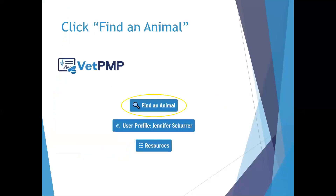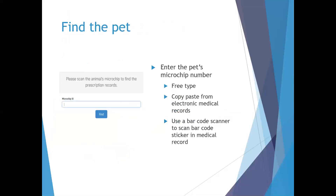At this point, you're going to click 'Find an Animal' and enter the pet's microchip number. This can be done by free typing, copy and pasting from your electronic medical records, or using a barcode scanner attached to the computer to scan the sticker that comes with most microchips.